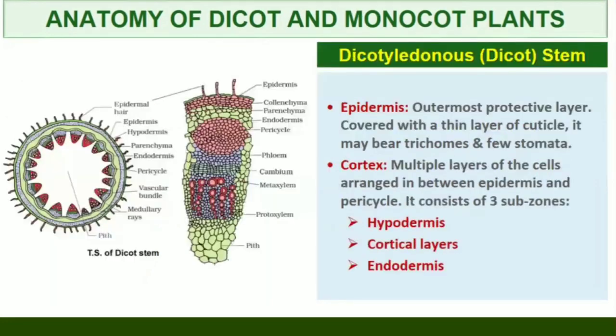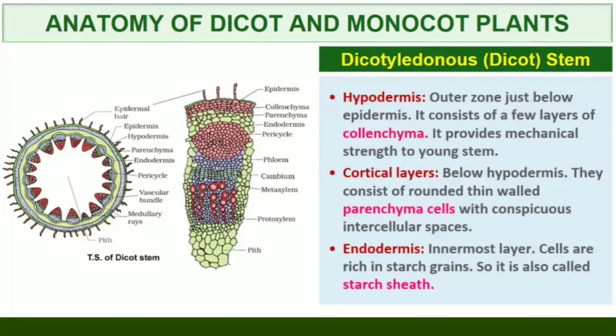Dicotyledonous Stem. The transverse section of a typical young dicotyledonous stem shows that the epidermis is the outermost protective layer of the stem, covered with a thin layer of cuticle. It may bear trichomes and a few stomata. The cells arranged in multiple layers between epidermis and pericycle constitute the cortex. It consists of three sub-zones. The outer hypodermis consists of a few layers of collenchymatous cells just below the epidermis, which provide mechanical strength to the young stem.